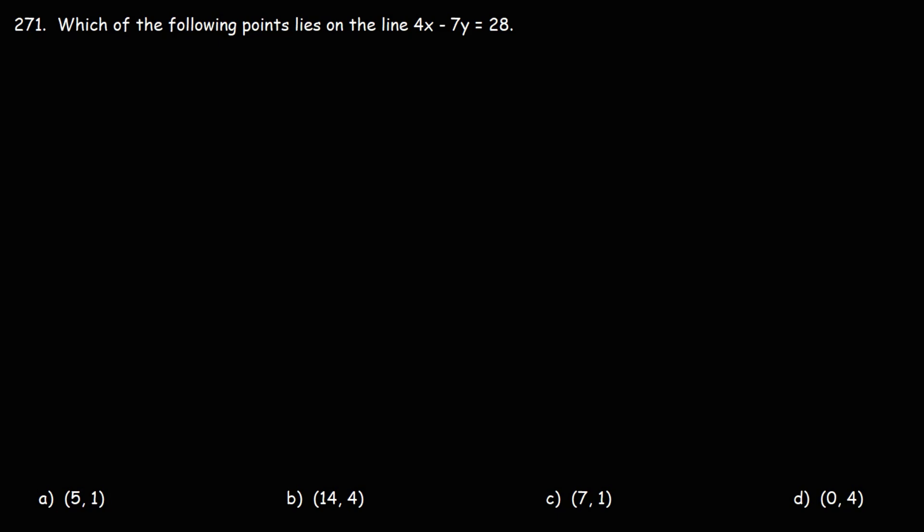Number 271, which of the following points lies on the line 4x minus 7y is equal to 28? We could find the answer by plugging in points.